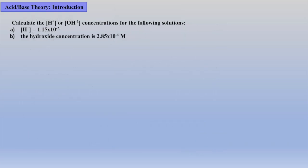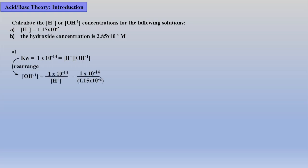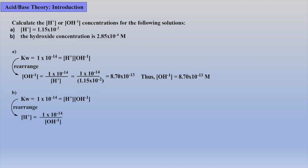So let's work a few examples to review the Kw expression and calculate the proton and hydroxide concentrations. For A, the proton concentration is given, thus we first rearrange our Kw expression, then plug in the given proton concentration to solve for hydroxide ion concentration. Using this same type of problem solving strategy for B, we are able to easily obtain the proton concentration.